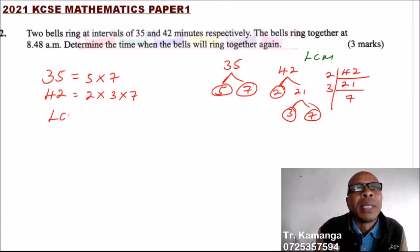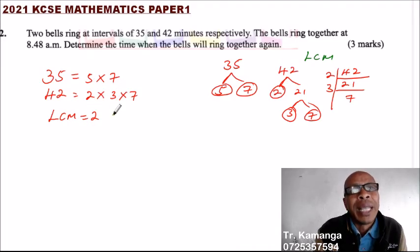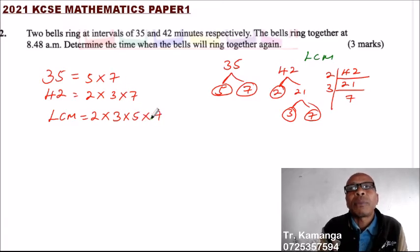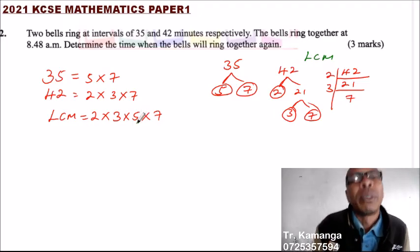To get the LCM, LCM equals 2. We start with 2, 2 is 2 power 1. We don't have another 2. We come to 3, we multiply by, we only have 1, 3. If we have 2 3's here, then we would have taken 2 times 3. But we only have 1. We have 5, so we multiply by 1, 5. And we have 1, 7. Multiply by 7.